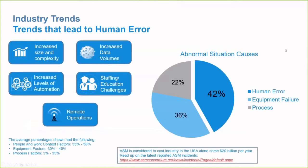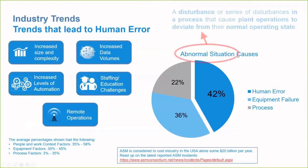The ASM Consortium — Abnormal Situation Management Consortium — actually selected the top three causes of abnormal situations occurring in a plant and found that human error contributes to 42 percent of the abnormal situation causes. An abnormal situation is defined as a disturbance or a series of disturbances that may cause plant operations to deviate from the normal operating state.